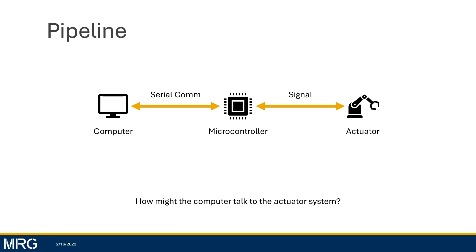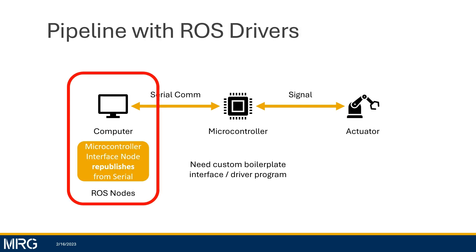How might the computer talk to our actuator system? One way you could approach this is by creating a custom boilerplate interface or driver program to talk between your computer and microcontroller. Your microcontroller would talk to your computer over some kind of protocol over serial, and you would need some kind of ROS node or program on your computer that translates those serial communications into your ROS network.